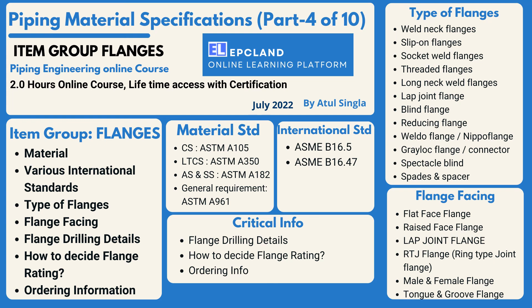We will cover material and international standards, types of flanges, flange facing — why different types of facing exist and their various applications — dimensional details, and ratings. For flange rating, we will look into two methods: standard tables and calculation. We will also cover ordering information so that the purchaser knows what to specify for the manufacturer. Flanges are a very important part of piping material specification.